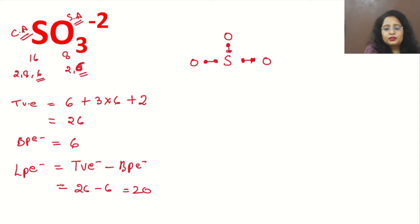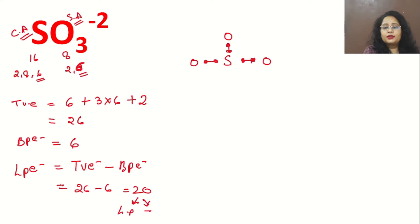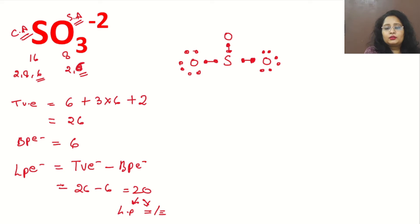These 20 electrons are used to complete the octets of the surrounding atoms and the central atom. We first use them as lone pairs on the oxygen atoms. Each oxygen already has 2 electrons from the bond, so we give 6 more to each — completing their octets. After distributing 6+6+6=18 electrons to the three oxygens, 2 electrons remain and are given to sulfur as a lone pair, completing all 20.